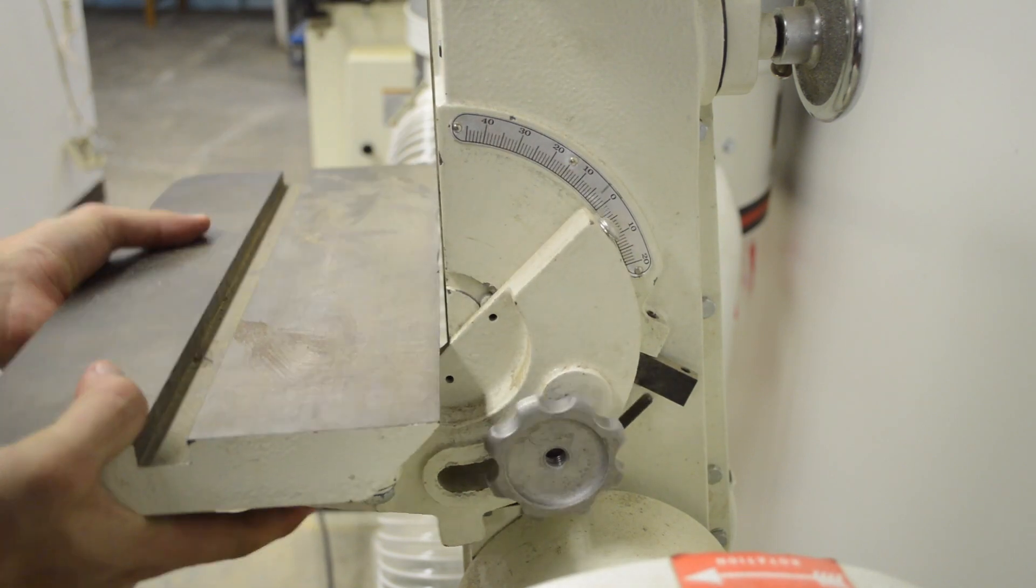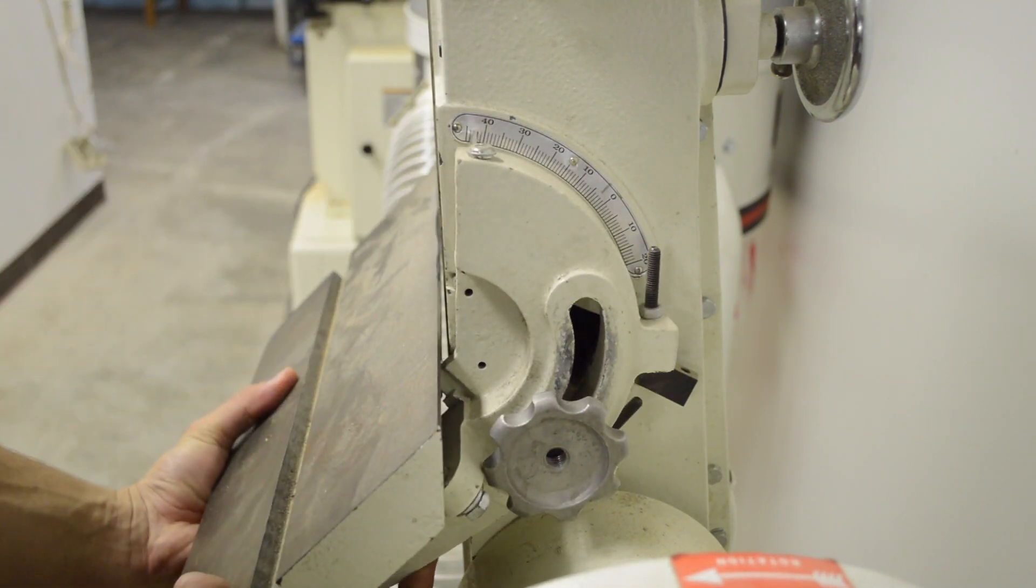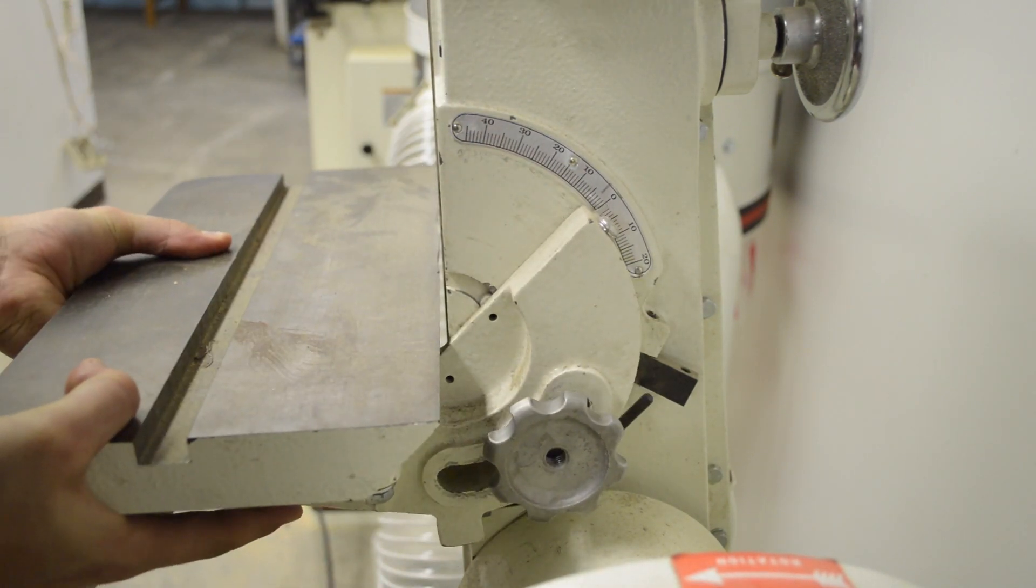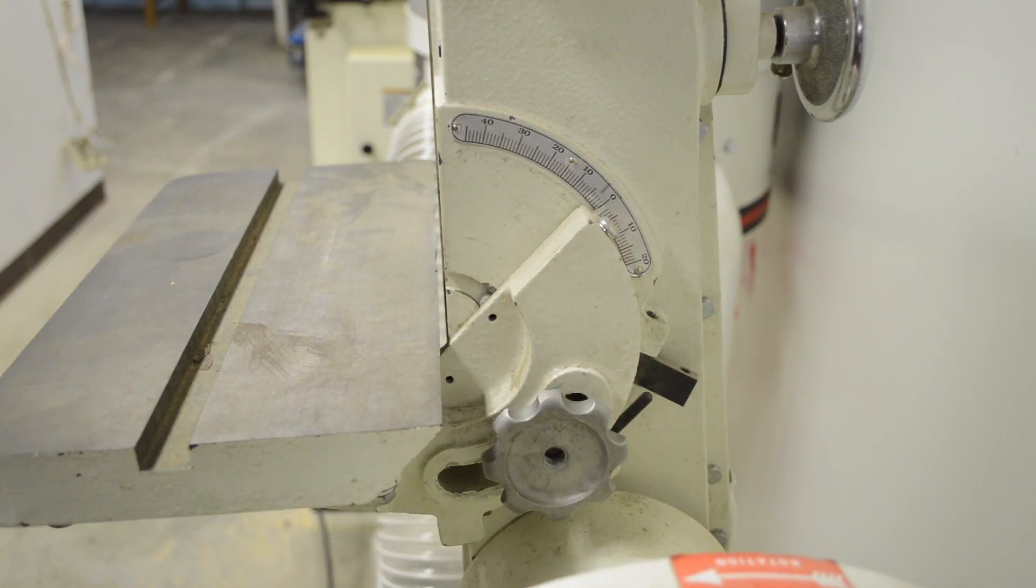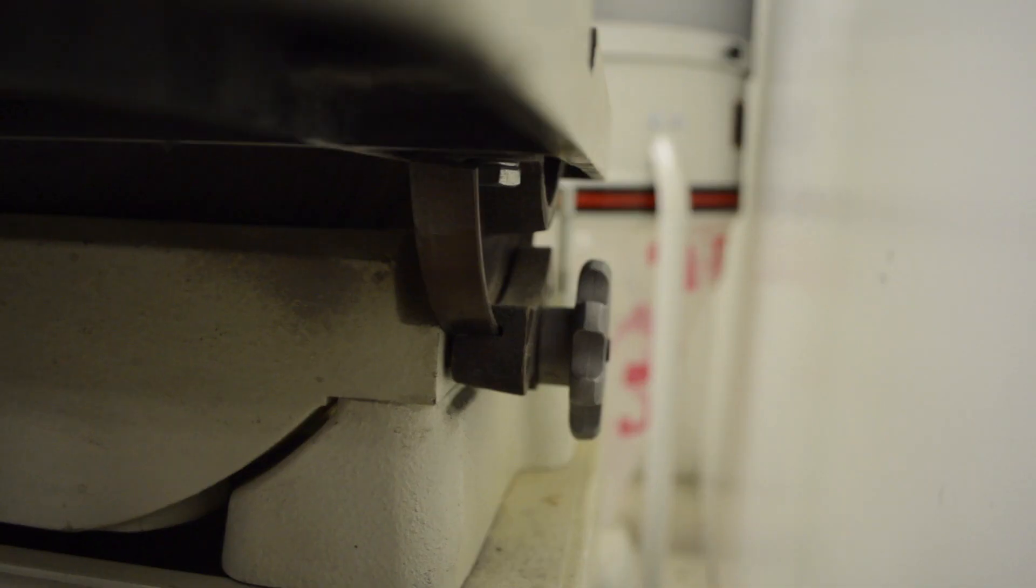To adjust the belt table, loosen the knob on its right side and adjust to the desired angle. You can adjust the disc table in the same way.